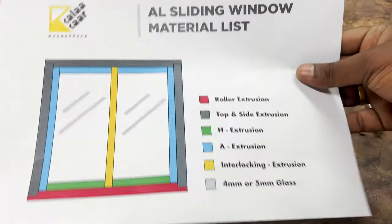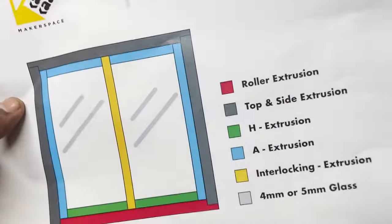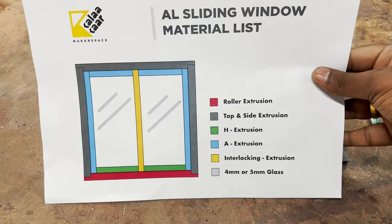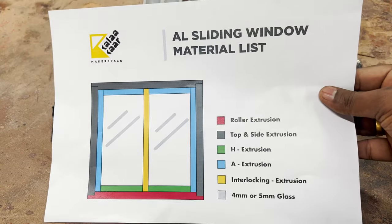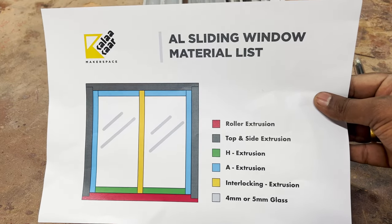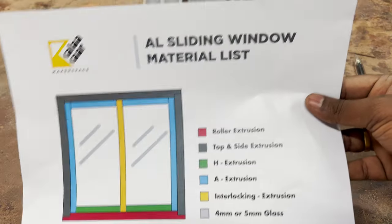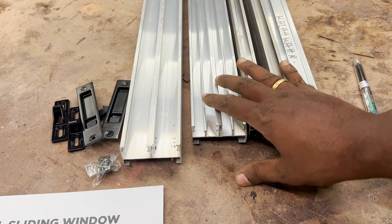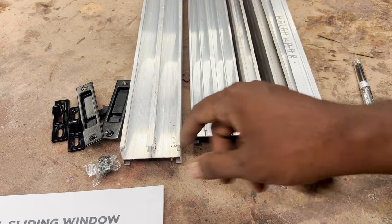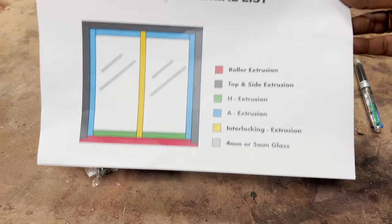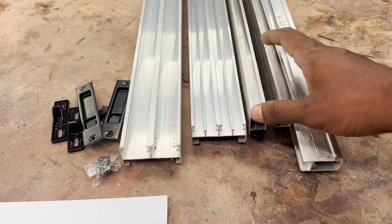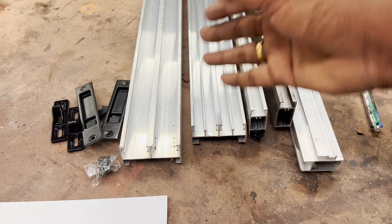When you go to a shop to buy the materials, make sure that you always have a list like this so you know what materials you want and how many of each. That way you can buy things economically. All these extrusions come in 12 feet or 6 feet depending on where you live. If you are making just one window it will not be cost effective, but for two or three windows you can judge and buy accordingly.